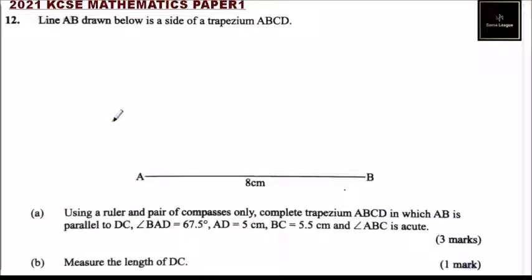This is question number 12 and we are told line AB drawn below is a side of a trapezium. So we have a line AB which is 8 cm.